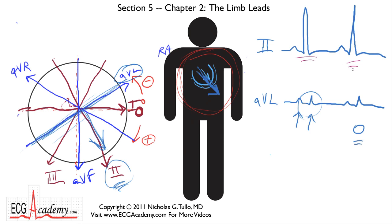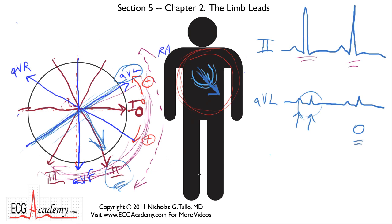In the intermediate course, we'll start to talk about axis, which is basically the exact angle that the QRS happens to be at. There is a normal range between minus 30 and plus 120 degrees where that vector or axis of the electrical signal is normal, and anything above or to the right of that is abnormal — defining axis deviation and allowing you to diagnose things like left anterior hemiblock and other advanced electrocardiographic diagnoses.